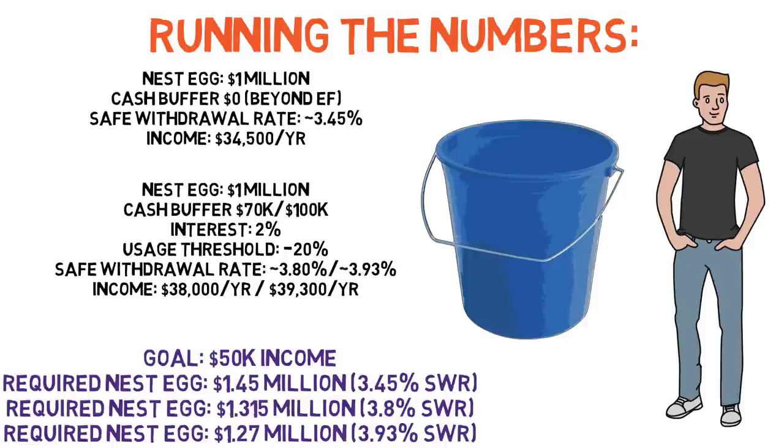With a $100,000 cash cushion, he'd only need about $1.27 million. That's a near $180,000 difference in required savings for having a $100,000 cash cushion, which I'd imagine for most people is more than they would need to cover like two or three years' worth of bare minimum expenses. And that to me sounds like a pretty good use of money, especially considering the other benefits that come along with having some extra cash on hand.